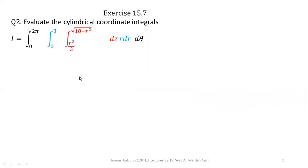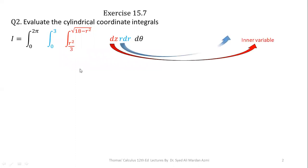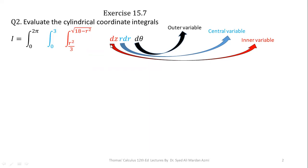We will learn triple integrals in cylindrical coordinates from Thomas Calculus book, 12th edition, exercise 15.7, question number two. In cylindrical coordinates, the order of variables is always fixed: the most inner variable is always Z, the center variable is always R, and the most outer variable is always theta. So we integrate with respect to Z first, then R, then theta, and this hierarchy is followed throughout all questions related to cylindrical coordinates.